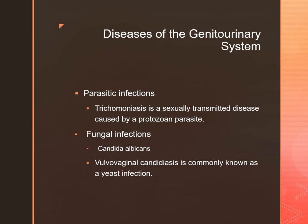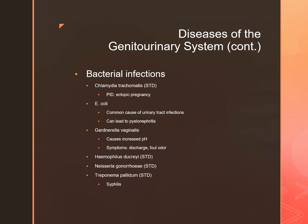Similar to the GI tract, the genitourinary system has opportunistic residents. For example, the parasite Trichomonas vaginalis. Fungal infections can also be caused by Candida albicans and Cryptococcus neoformans. Bacterial diseases of the genitourinary system include chlamydia, UTI, vaginosis, chancres, gonorrhea, and syphilis.